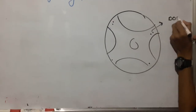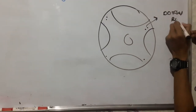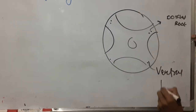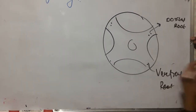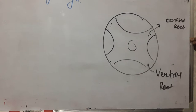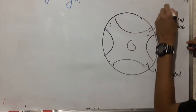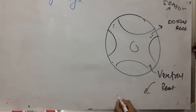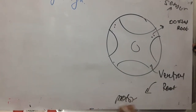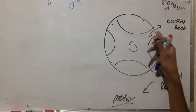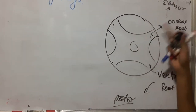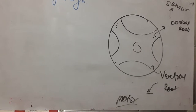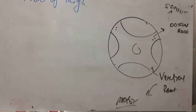So dorsal root and ventral root of the spinal cord. The dorsal root is always sensory in nature, and the ventral root is always motor in nature. The nerve fibers related to the dorsal root are always sensory, and those related to the ventral root are always motor. These are nerve fibers.